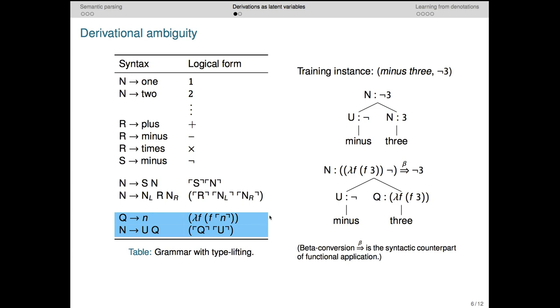It's easy to add this possibility of derivational ambiguity to our current grammar with two rules that together implement the logical operation that is often called lift.